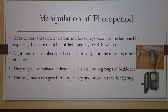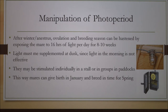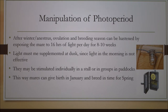It is possible to manipulate the photoperiod of mares in order to speed up the breeding season and ovulation. After a period of anestrus, or after winter, we can hasten ovulation by exposing mares to at least 16 hours of light per day for a period of 8 to 10 weeks. It is very important to maintain that duration for effectiveness. Light is recommended to be supplemented at dusk rather than in the morning, and mares can be stimulated individually in stalls or in groups. This way you ensure mares give birth in January and breed in time for spring.